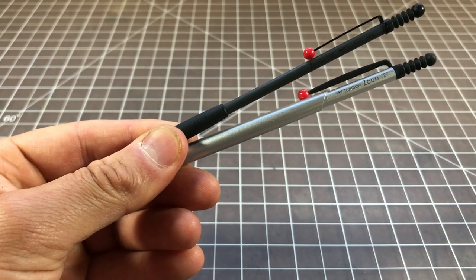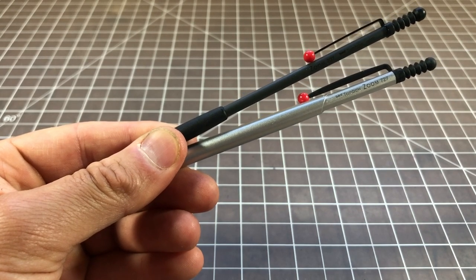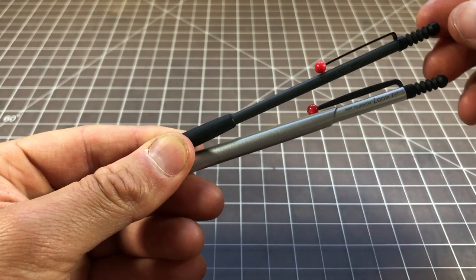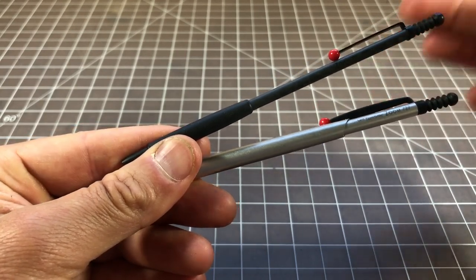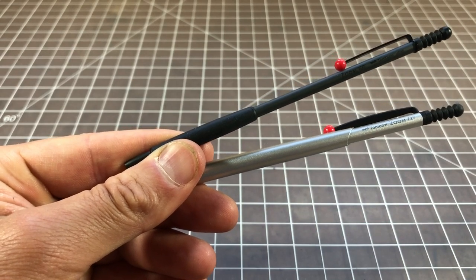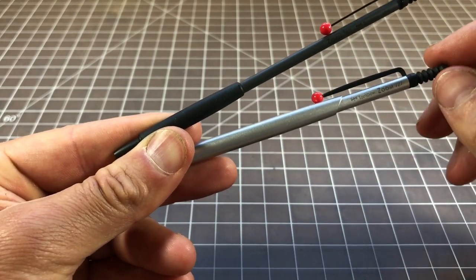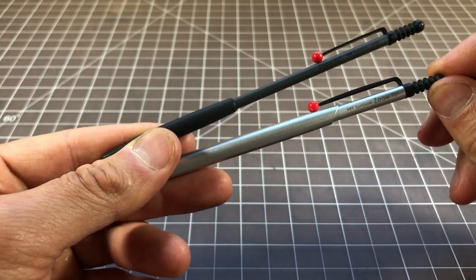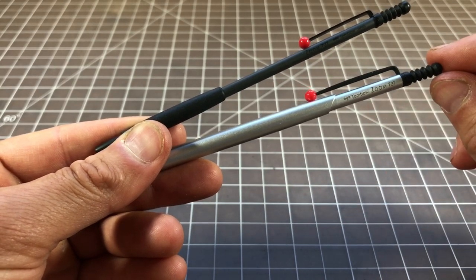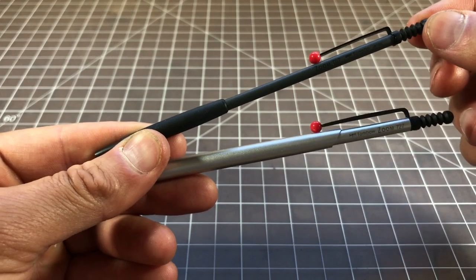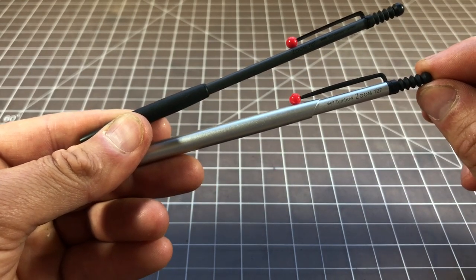In this video I wanted to do a comparison of two very minimalist, very tiny ballpoint pens. One is called the Tombow Zoom 707 and this one has been around for a long time. I wouldn't say it's iconic but it's definitely very popular and you see pictures of it all the time. The other is the newer sort of replacement for it or newer version, it's called the Tombow Zoom 727.